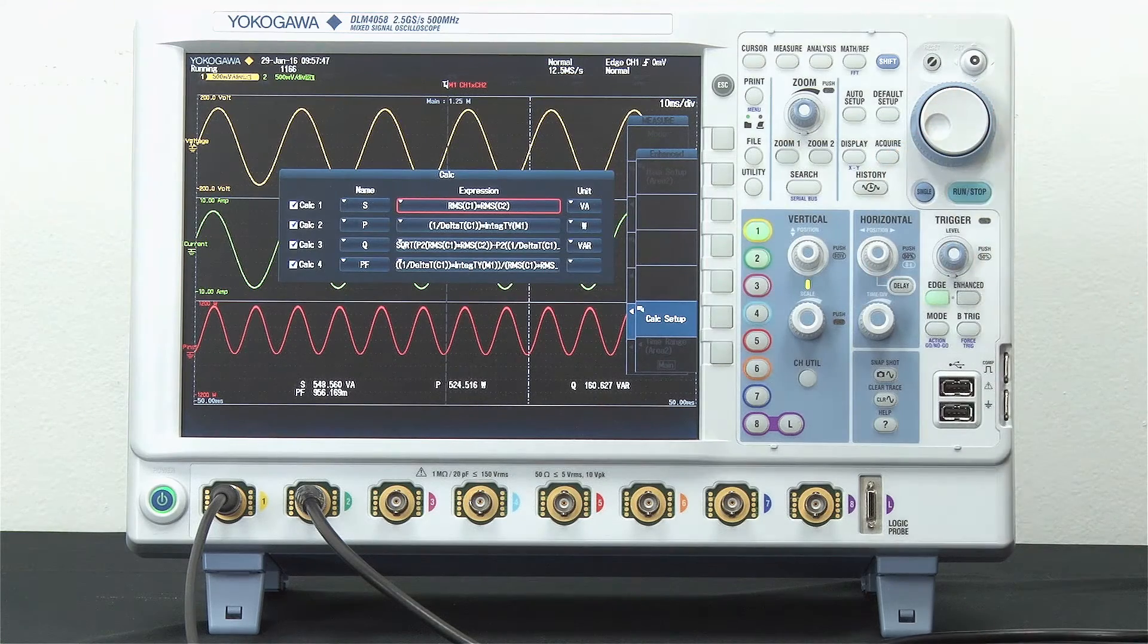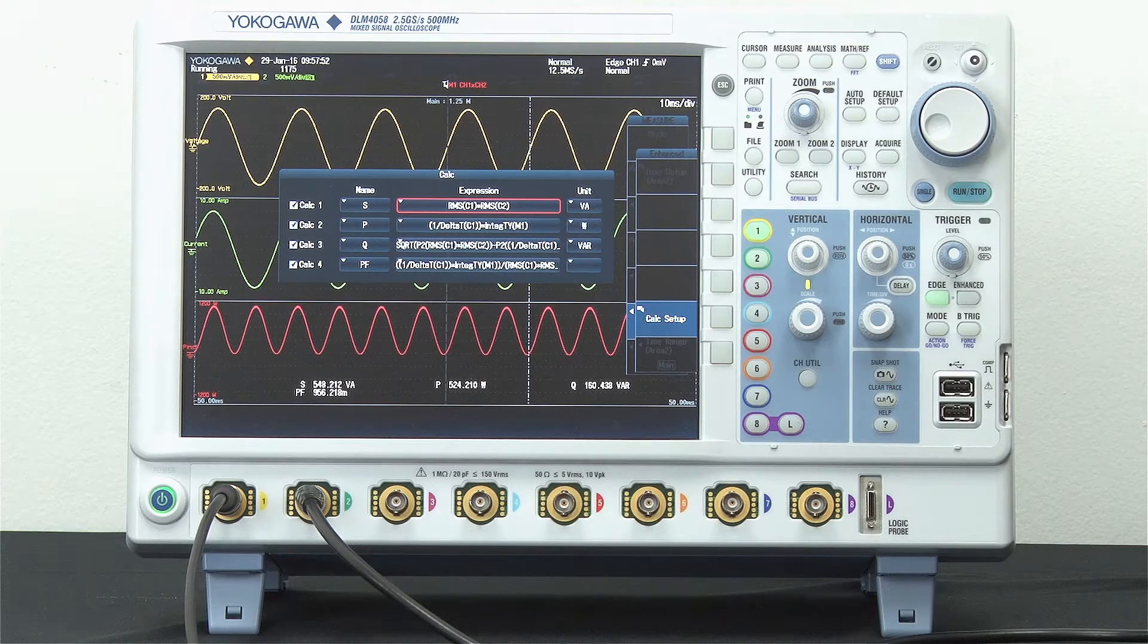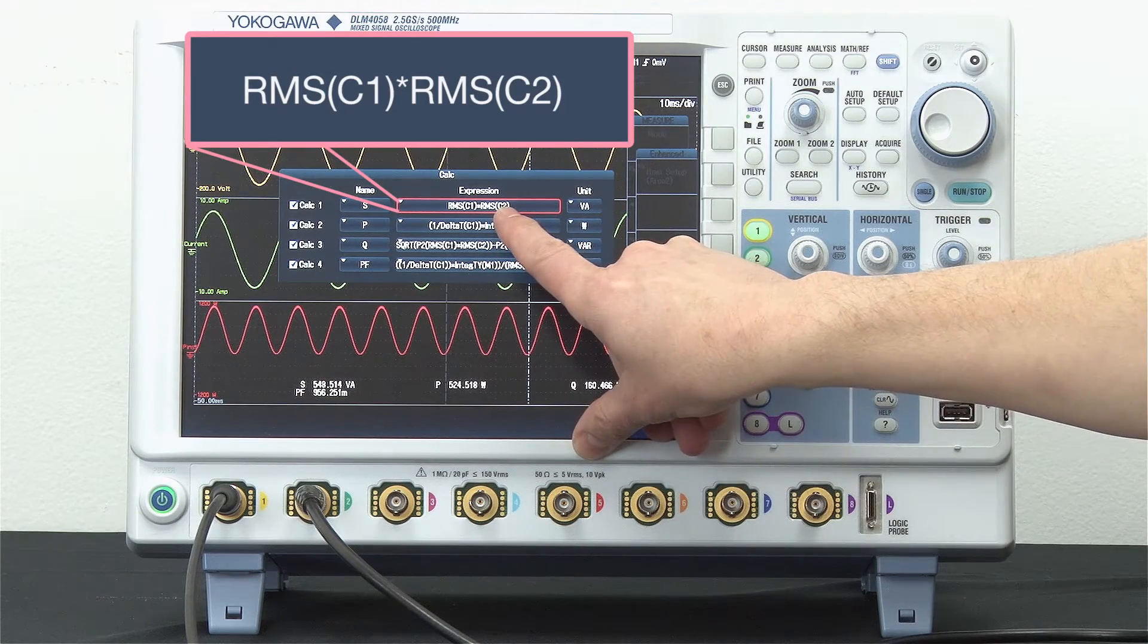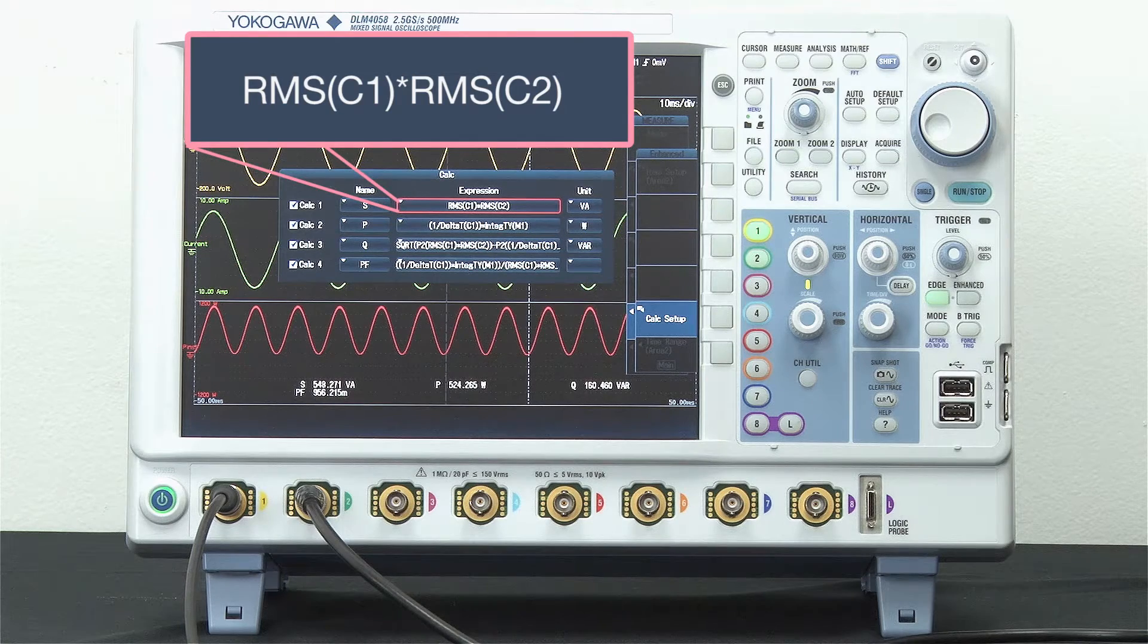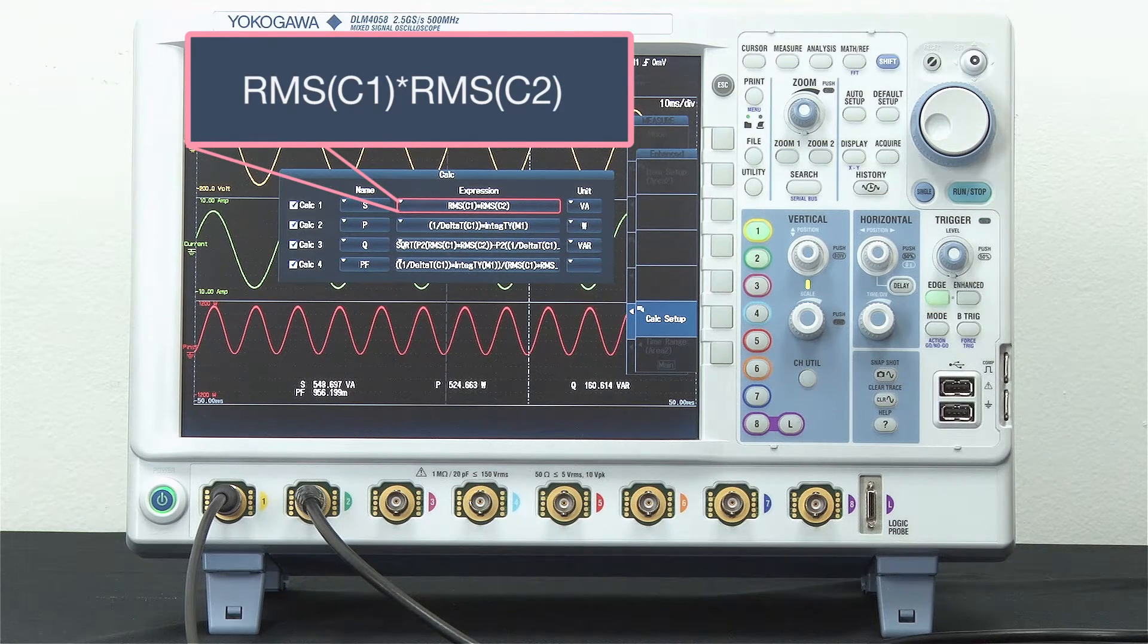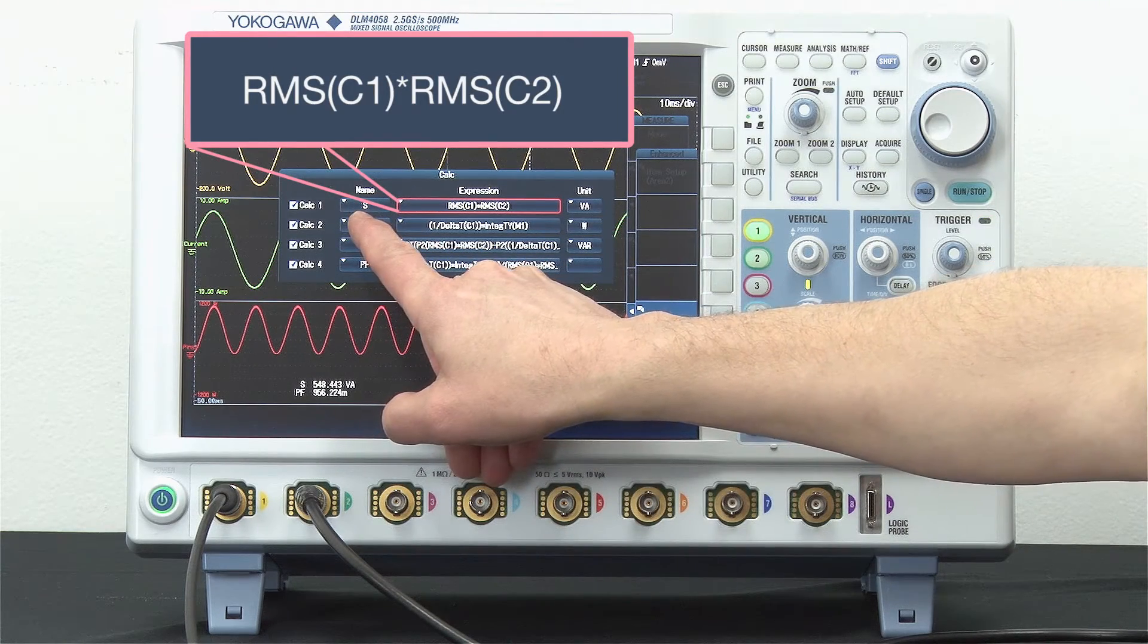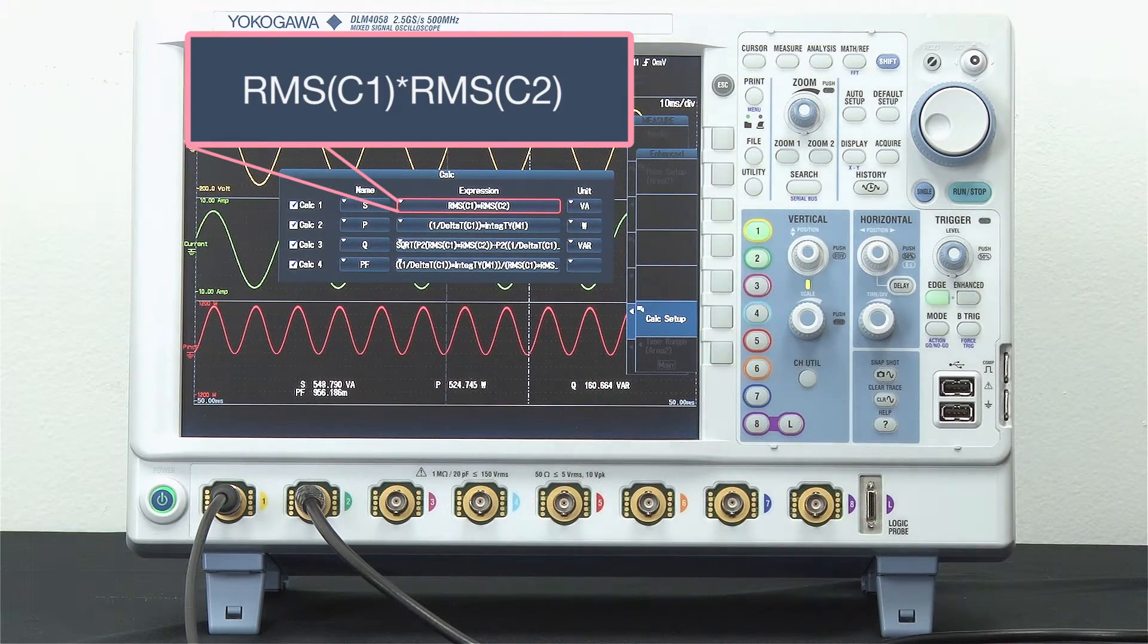To enter these equations, I use either the soft key onboard editor or I can use an external USB keyboard. Here you can see that I've built the equation for apparent power. The equation I've put in calc one field is the equation for apparent power, which is the RMS of the voltage waveform times the RMS of the current waveform. I've named it S, which is an industry standard for apparent power. I've given it units of volt amps, also industry standard units.